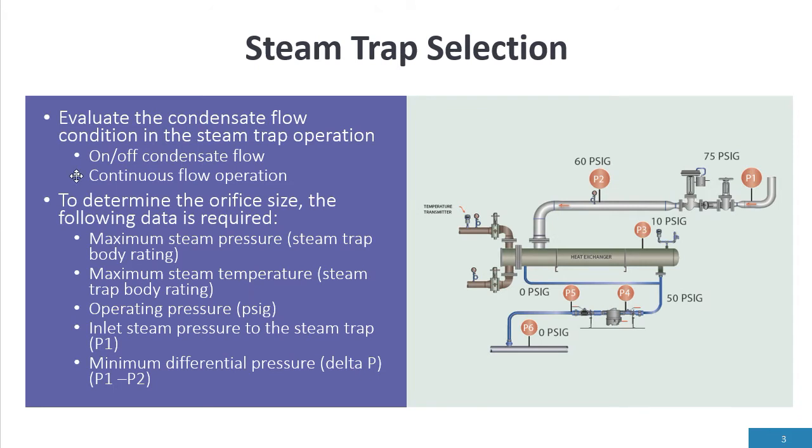Evaluate the condensate flow condition for the steam trap operation. We have two types of steam traps. No matter what steam trap is manufactured, there's two types: continuous flow and on-off operation. So if I have a heat exchanger with a modulating valve, that's going to be continuous flow to the process. I might want to go with a continuous flow type steam trap. The other operational design is on-off.